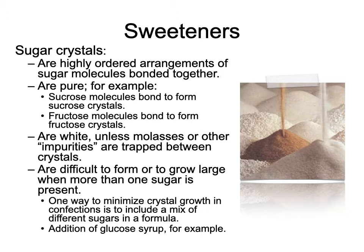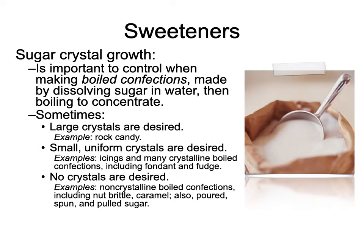It's very difficult to grow very large sugar crystals when more than one sugar is present — which is a good thing. To make large crystals like rock candy, you have to isolate one monosaccharide. To keep crystals small, which is what we're usually after in baked products, we can mix sugars together. By adding glucose syrup to a sugar syrup, for example, we ensure the sugar crystals present are so small they're barely detectable.